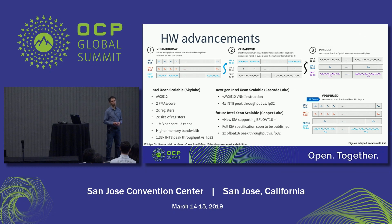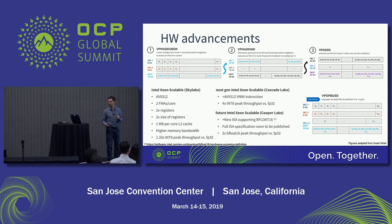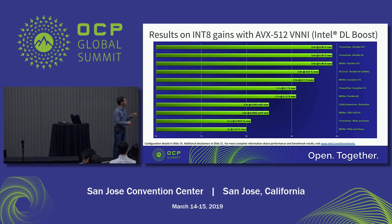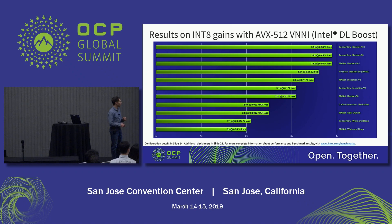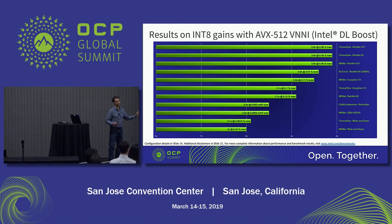Focusing on Cascade Lake and VNNI, we get theoretically 4x more peak throughput over FP32. In actual observed gains, for some models we are close to peak — 3.9x for some ResNet-50 configurations — and for others we achieve around 2x. Across all models we've optimized, we're seeing between 2x and nearly 4x gains using the VNNI instruction.